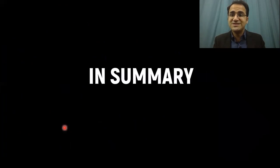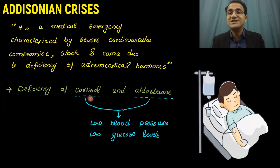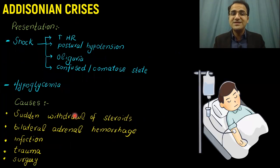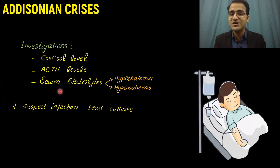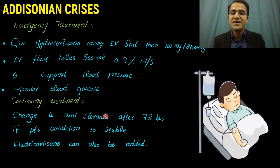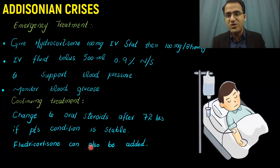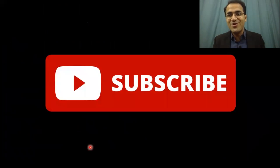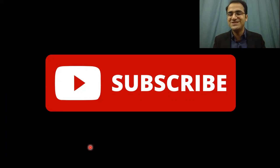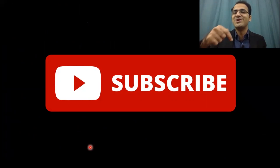In summary, Addisonian crisis involves deficiency of cortisol and aldosterone leading to low blood pressure and low glucose levels. The patient will be in shock and hypoglycemia, with sudden withdrawal of steroids being an important cause. Investigations include cortisol, ACTH levels, and serum electrolytes showing hyperkalemia with hyponatremia. Emergency treatment includes hydrocortisone 100 mg IV stat, fluids, and transitioning to oral steroids with fludrocortisone as needed. If you liked this video, please click subscribe and check out other videos on emergency medicine — the link is in the description below. Thank you.